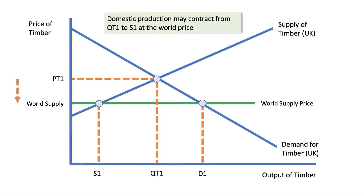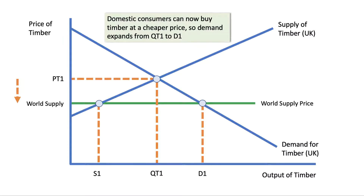If we now trade at the world price, domestic production may contract from QT1 down to S1 — a contraction down the domestic supply curve because they can no longer get the same price per ton of timber. Domestic consumers, such as construction firms, are now able to buy timber at a reduced price, which allows them to expand their demand — moving down the demand curve from QT1 to D1.